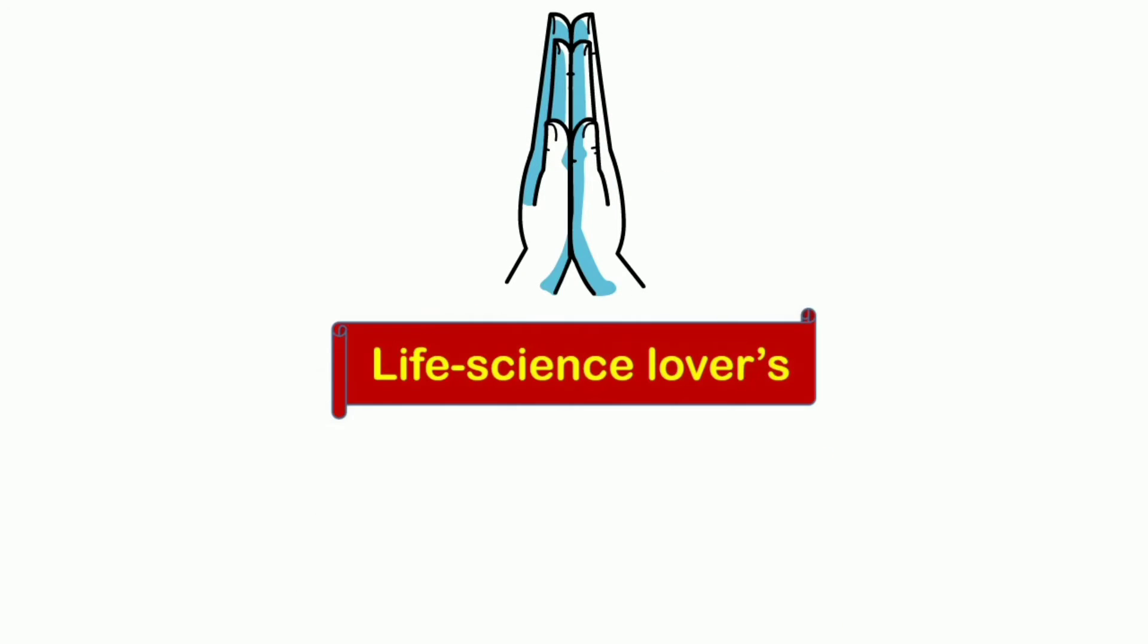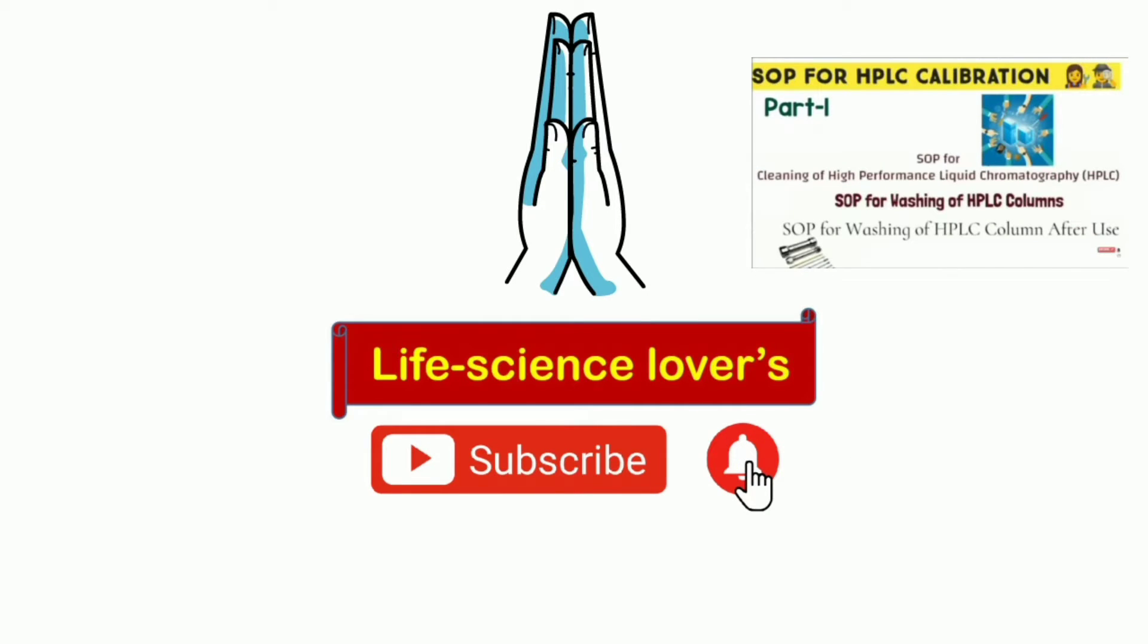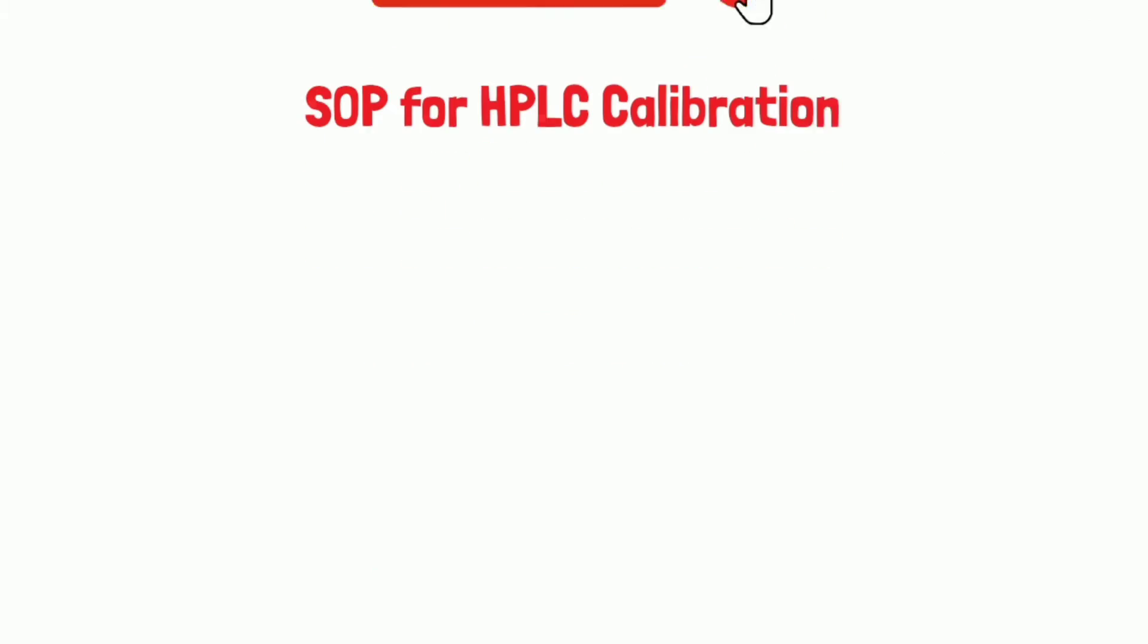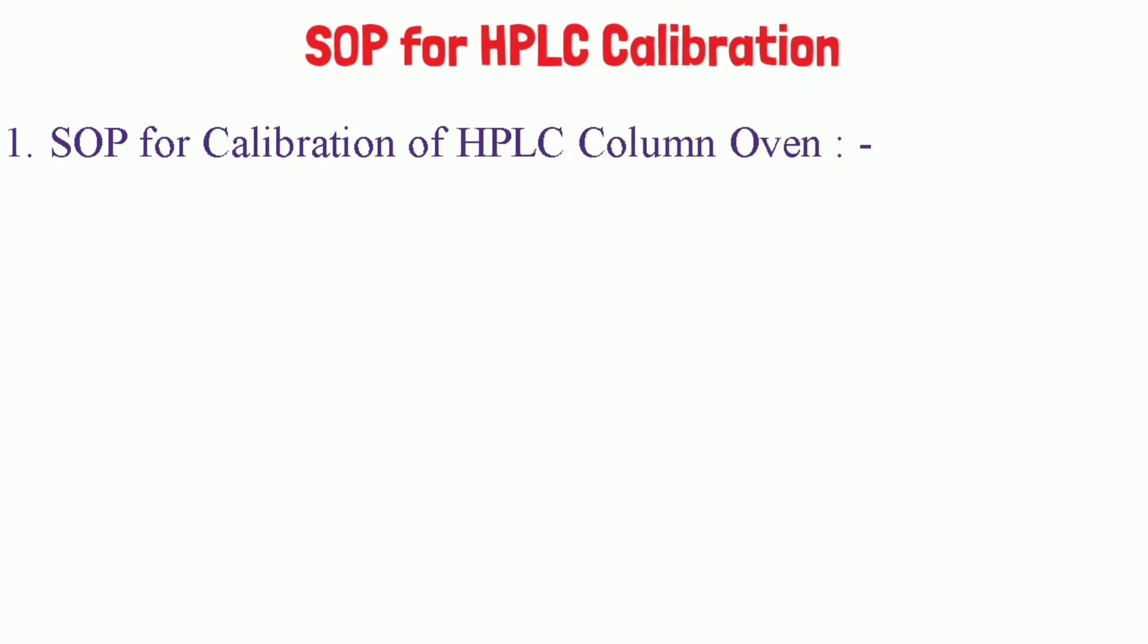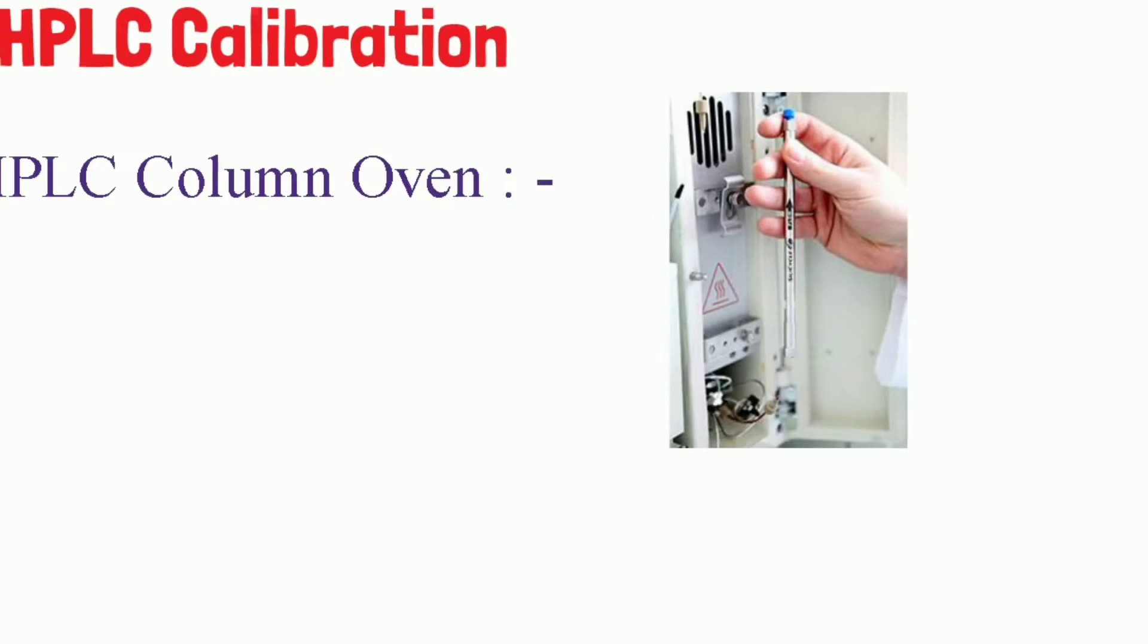Welcome to Life Science Lover channel. In previous lecture we have already covered one topic for SOP for HPLC calibrations. Now we will continue that topic. First one is SOP for calibration of HPLC column oven. This is HPLC column oven chamber. In my previous lectures I have mentioned this with one video also, so you can watch that previous lecture. I will mention that lecture's link in my description.